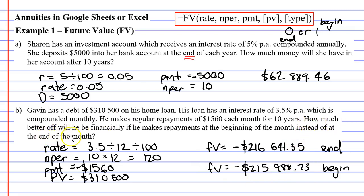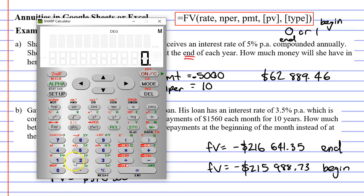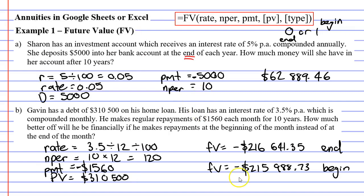Now the question asked, how much better off will he be financially? So how do we answer that? Well, we need to find the difference between these amounts to answer that question. To do that, we can really just ignore the negatives. And I'm going to use the calculator for this one. So $216,641.35 minus $215,988.73 gives us $652.62. So this is how much better off he will be financially.